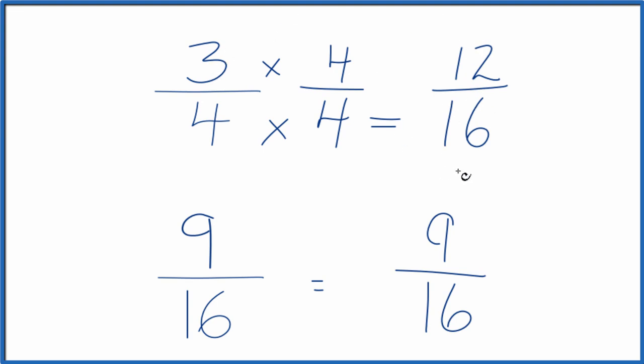So let's compare the numerators now that we have the same denominators. 12 is greater than 9, so 12 sixteenths, that's greater than 9 sixteenths. Therefore, 3 fourths, that's greater than 9 sixteenths as well.